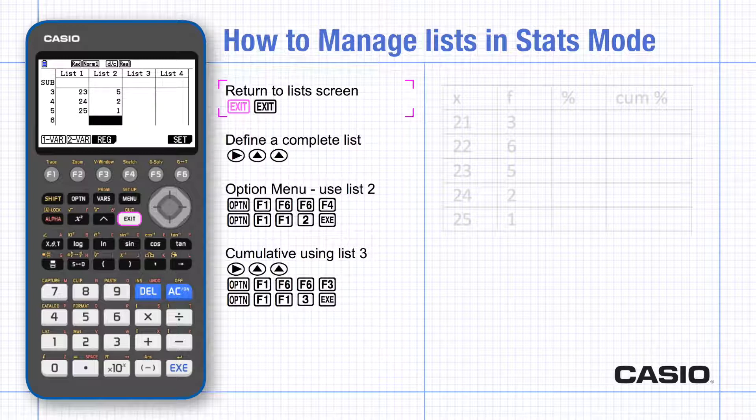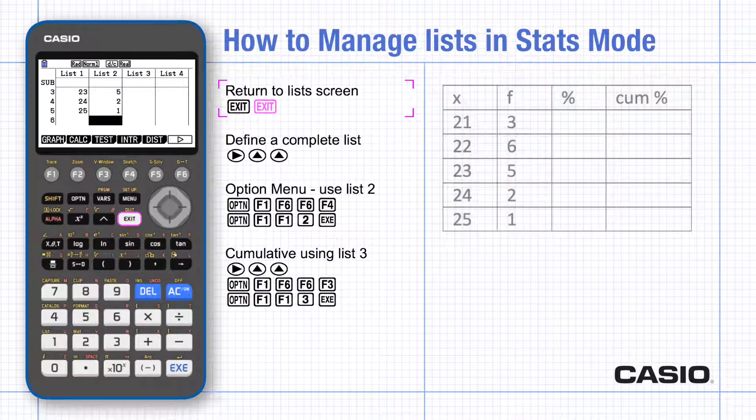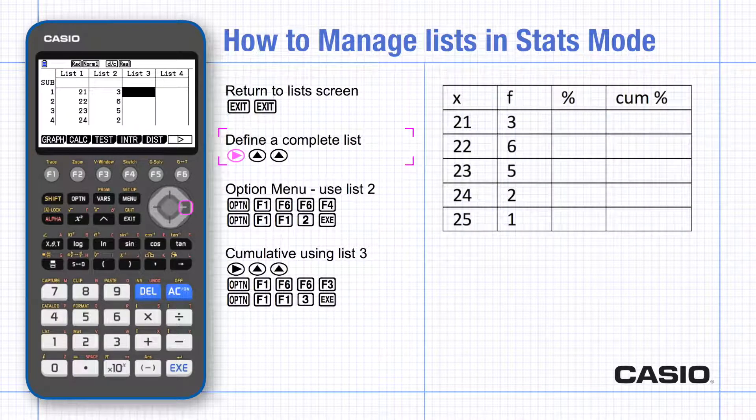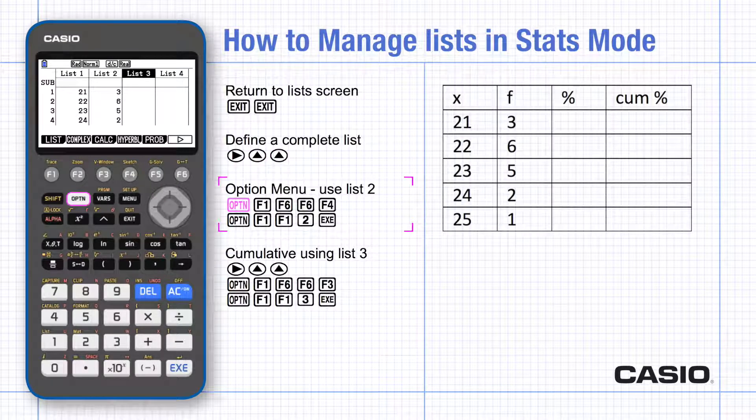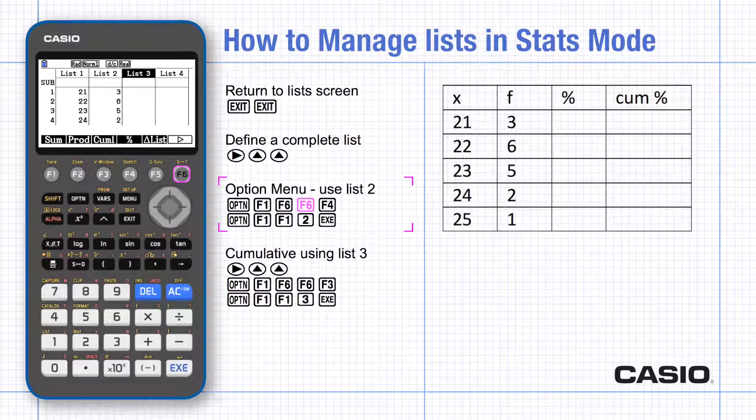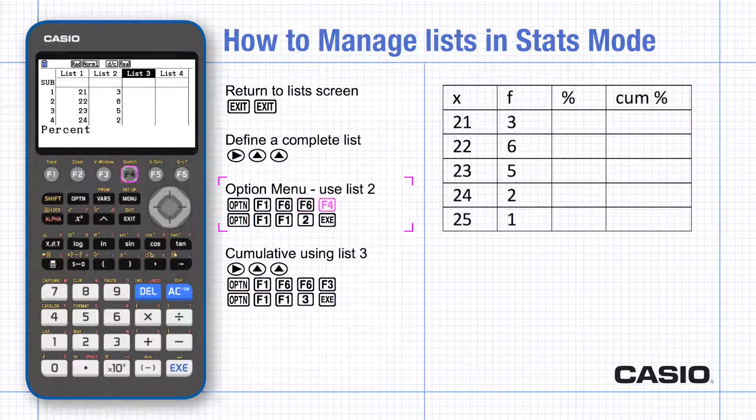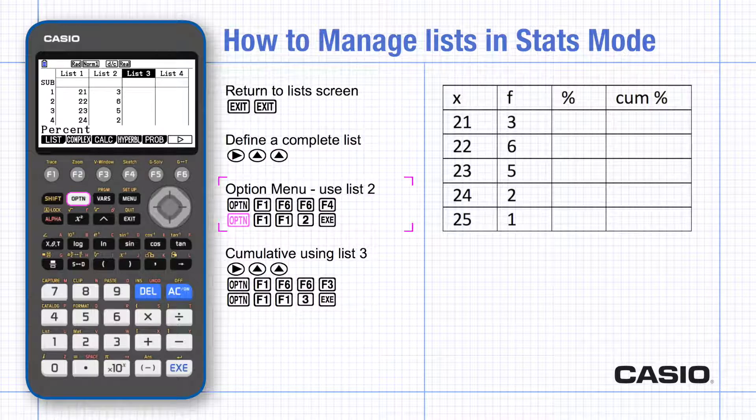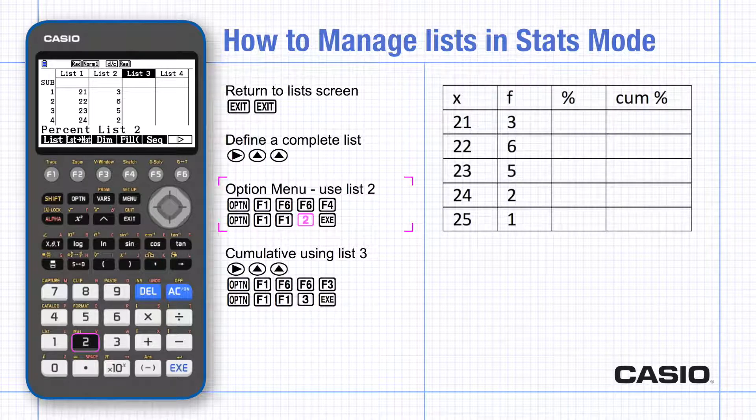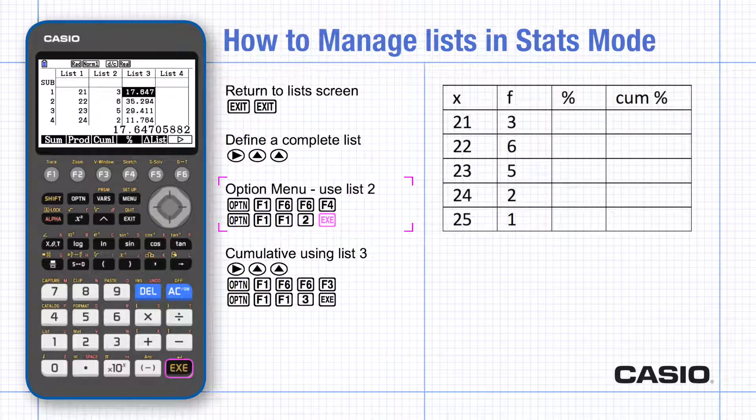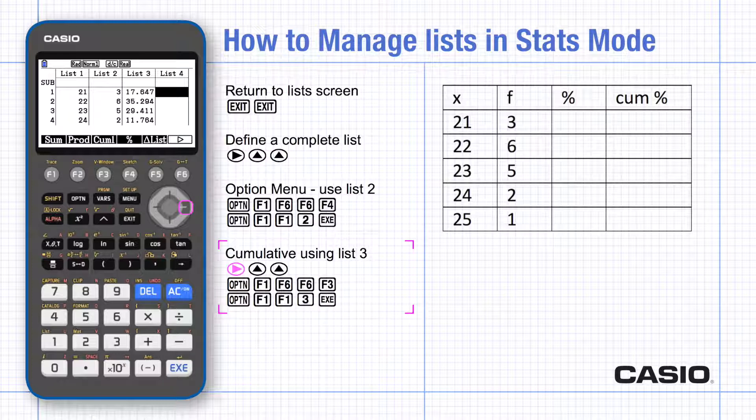Exit to return to the list screen and now scroll up to the heading for list 3. From the option menu, choose list and then scroll across to find percentage. To type the word list, use option again and list and list and enter list 2 into the formula. The percentage of the total frequency is now displayed.